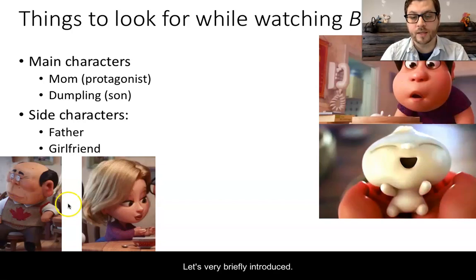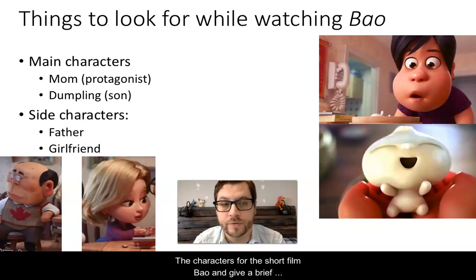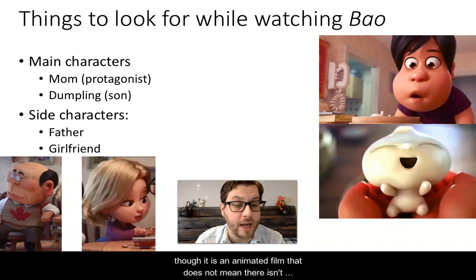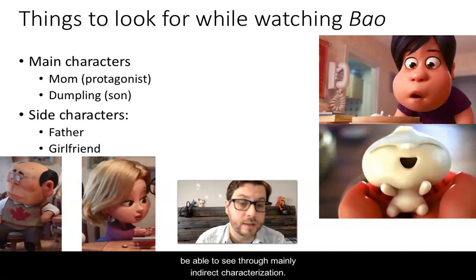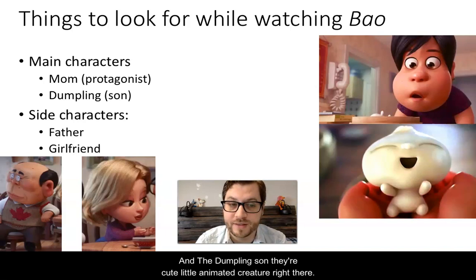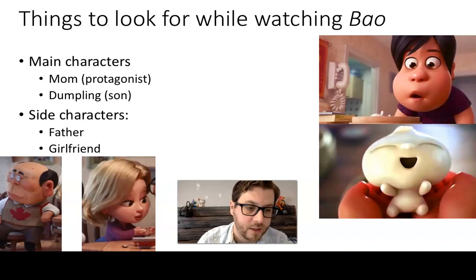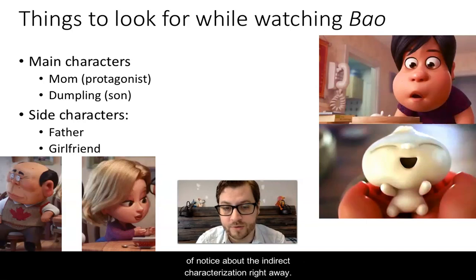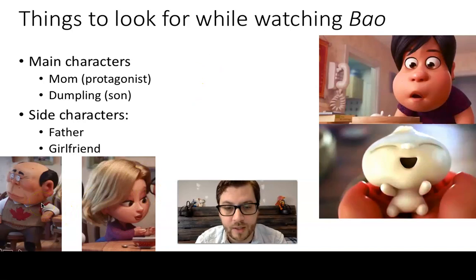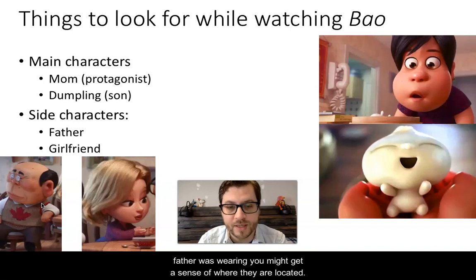Let's briefly introduce the characters for the short film Bao. Even though it is an animated film, that does not mean there isn't acting and characterization going on — it may be of a different type, but it is definitely something we will be able to see through mainly indirect characterization. Our main characters are the mother and the dumpling son. Some important side characters are the father and later on the girlfriend. One thing you can notice about indirect characterization right away: look at what the father is wearing — the sweater vest might give you a sense of where the family is located.